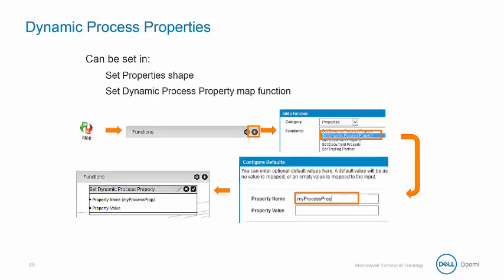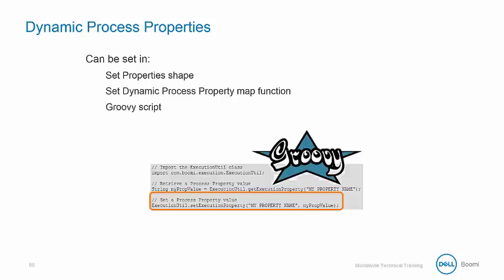You can also set a dynamic process property in a map with the setDynamicProcessPropertyMap function. A third way to set a dynamic process property is with GroovyScript.